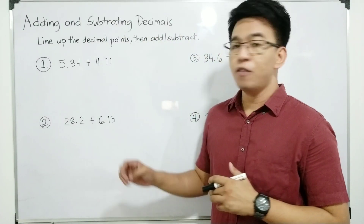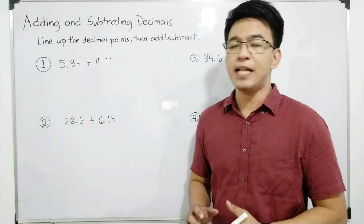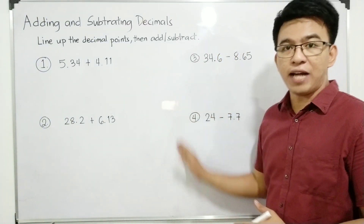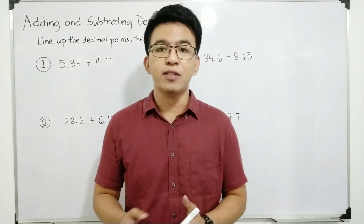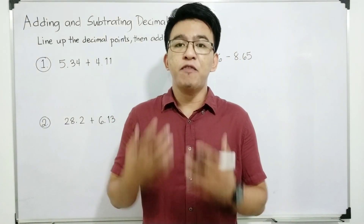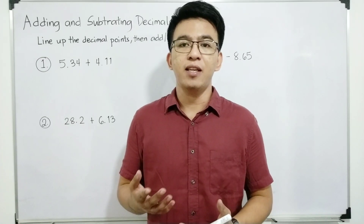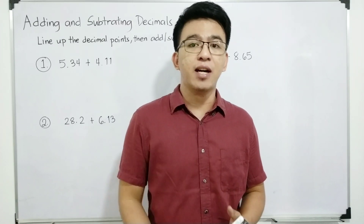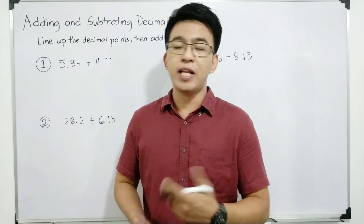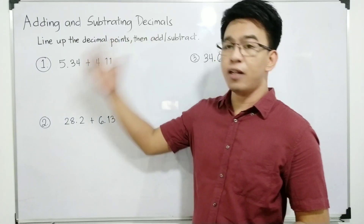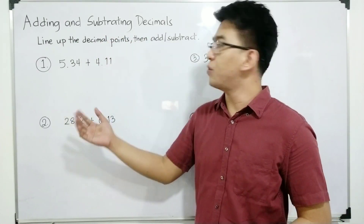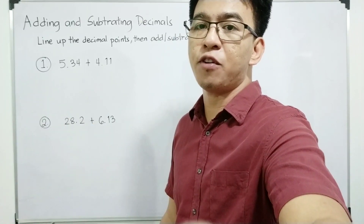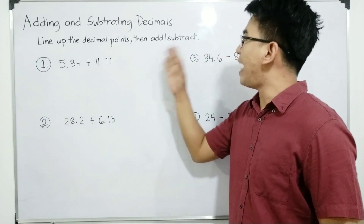So I have here four different examples on how to add decimals and subtract decimals. You're free to answer these questions before I start discussing it. You can press the pause button or you can play it along while I'm discussing this video. So let's get started. The direction here is to line up the decimal first, then add and subtract.